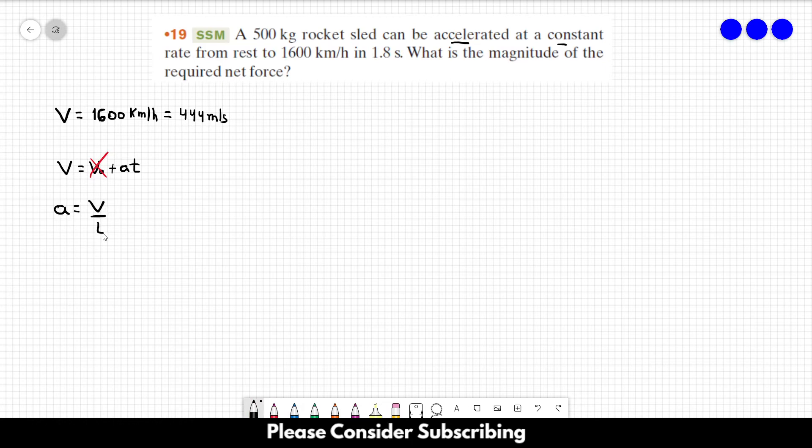Or 444 over 1.8, which gives us 247 roughly meters per square second. So we know the acceleration of the rocket sled.